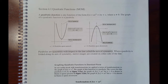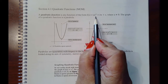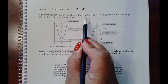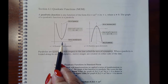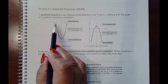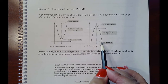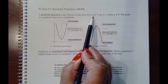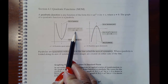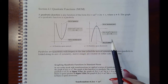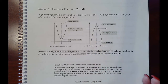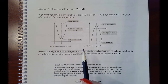This is the lecture video for section 4.1 on quadratic functions. Quadratic functions are of the form ax squared plus bx plus c. The a value, the coefficient of the squared term, cannot be zero, otherwise it would not be a quadratic function. The graph is a parabola — one that opens upward when the a value is positive, and downward when the a value is negative.